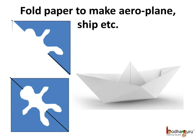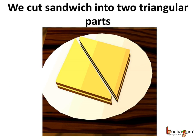You must have seen how a sandwich is divided into two equal parts. Sandwich is cut into two equal parts diagonally. Look here, both the parts are triangles.